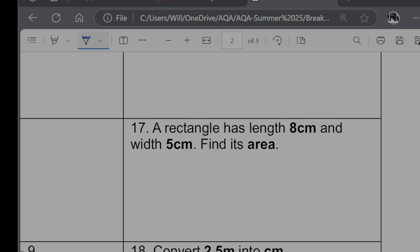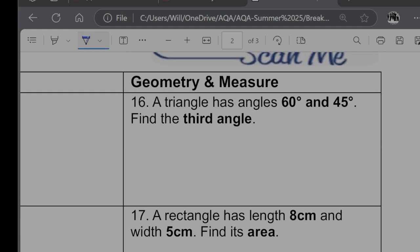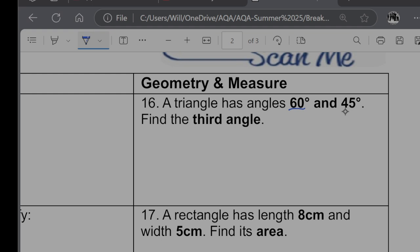Question 16. A triangle has angles 60 degrees and 45 degrees. Find the third angle. So this is based around sum of a triangle is 180. So I want to do 180 take away the two known angles. Let's do 60 plus 45. So that's going to become 180 minus 105, which will just give me 75 degrees.